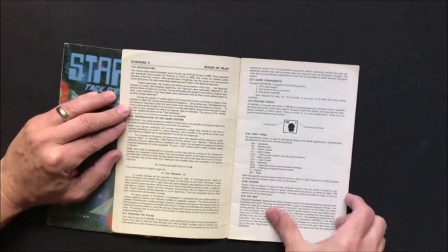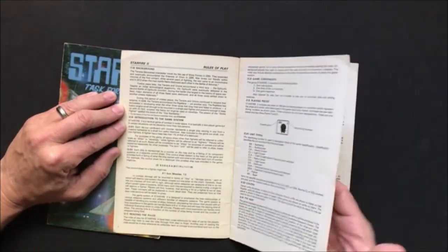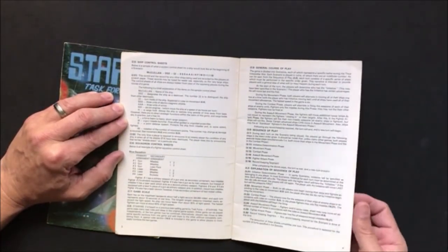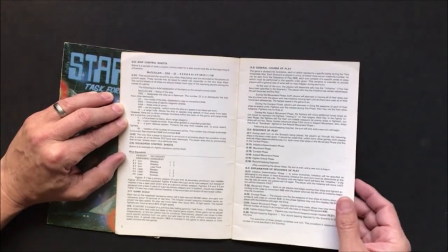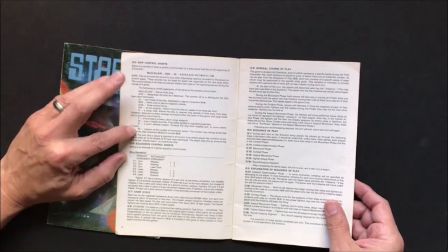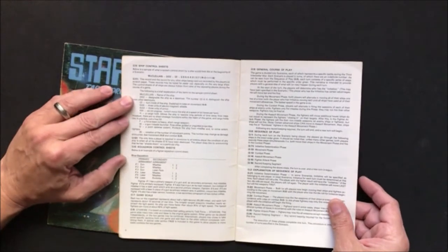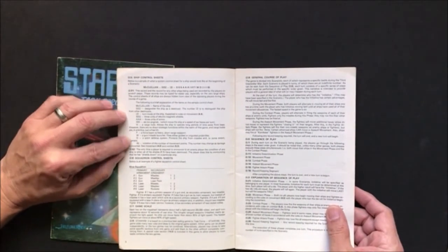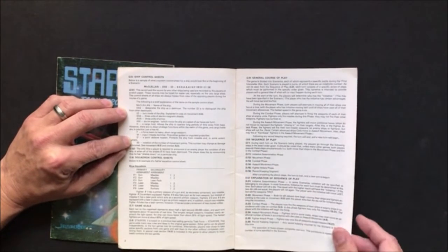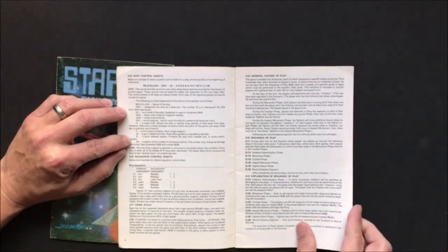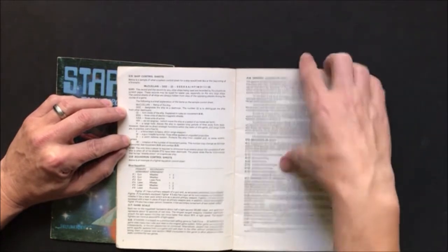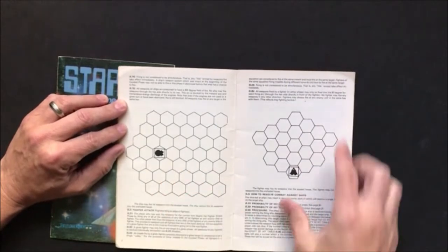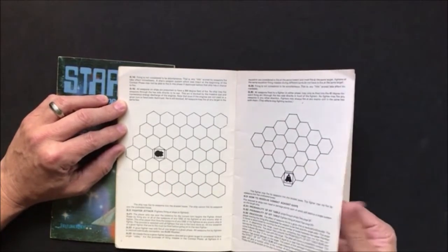Starfire Two still had the same sort of systems and things like that. It adds quite a few types of systems. It explains more about the ship control sheets, the squadron control sheets.